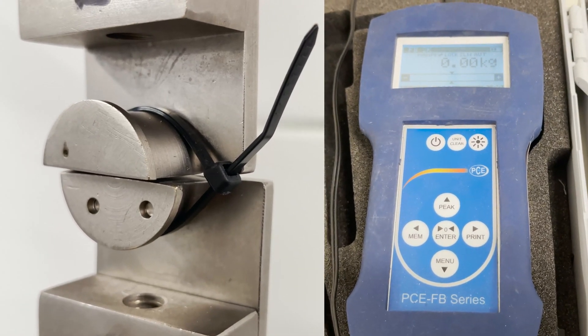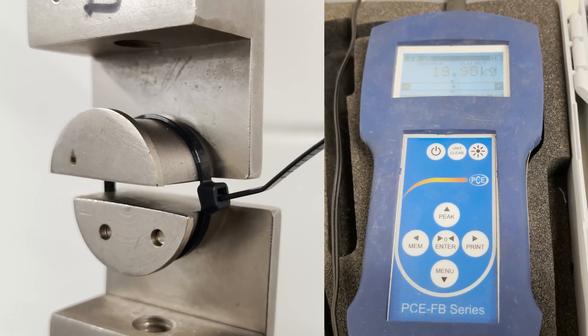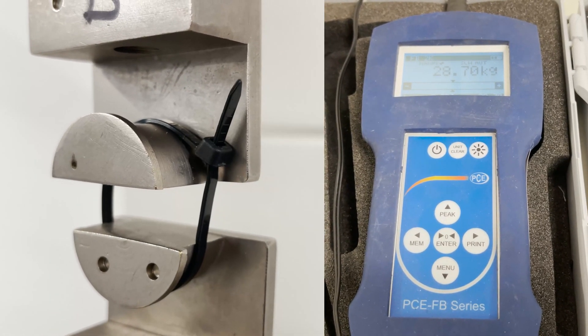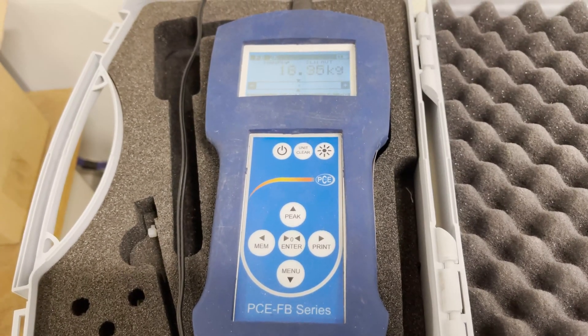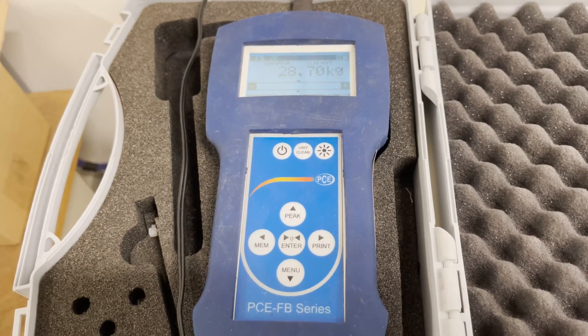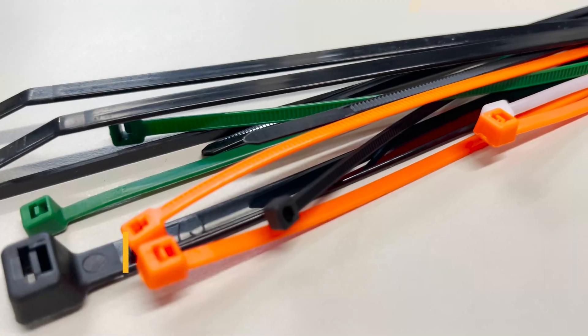The maximum tensile strength that the cable ties withstood during the test is shown on the display on the machine. When the tensile strength is too low, we contact the manufacturer and reject the batch.